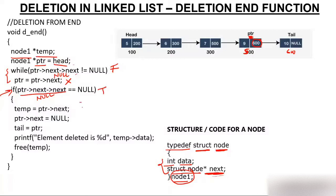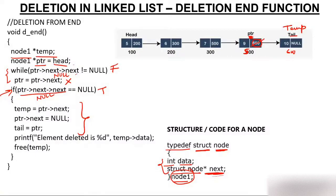Inside the if block: temp = PTR->next. PTR->next is 600, so the last node now has two names — tail and temp. Then PTR->next is set to null: instead of keeping 600, PTR->next will keep null. The moment it keeps null, the link to the last node is broken.